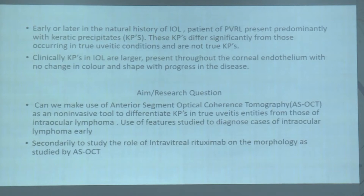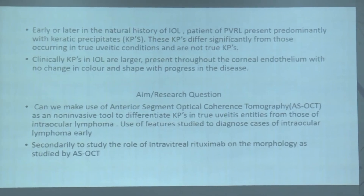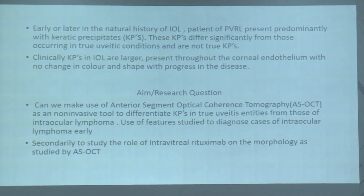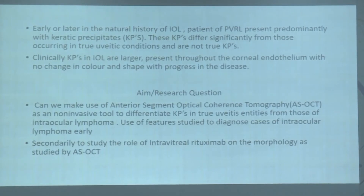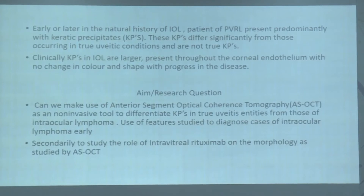The KPs in intraocular lymphoma are larger. They are present throughout the corneal endothelium. They show no signs of change in shape and colour as the disease progresses. With those thoughts in mind, we framed our research question.